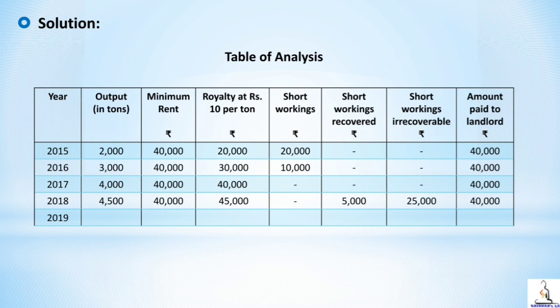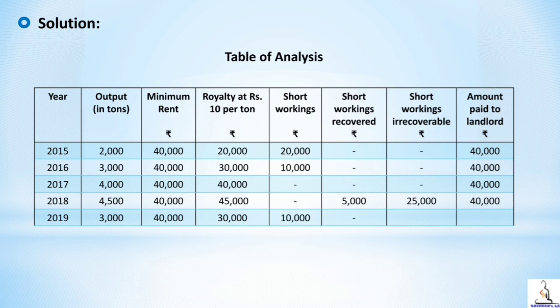In 2019, output is 3000 tons, minimum rent is 40,000, and royalty is 3000 × 10 = 30,000. Royalty is less than minimum rent, so minimum rent is payable and there is a short working of 10,000. Since short workings can only be recouped within the first four years, and 2019 is the fifth year, this 10,000 becomes irrecoverable immediately. Amount paid to landlord is 40,000.